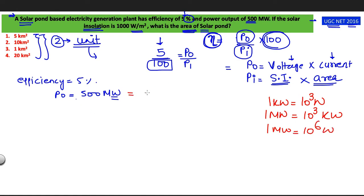So here my power output will be 500 megawatt, I can write 10 to the power 6 watt. For power input I can write solar insulation into my area. Here my solar insulation is 1000 watt per meter square and my area I am assuming A capital A. Now here in the solar insulation I can see my unit it is meter square. So whatever answer I get for area that will be in meter square.